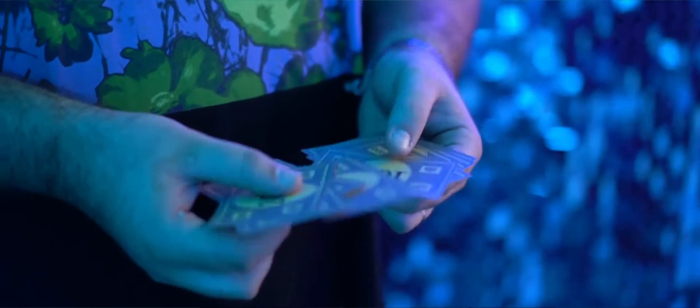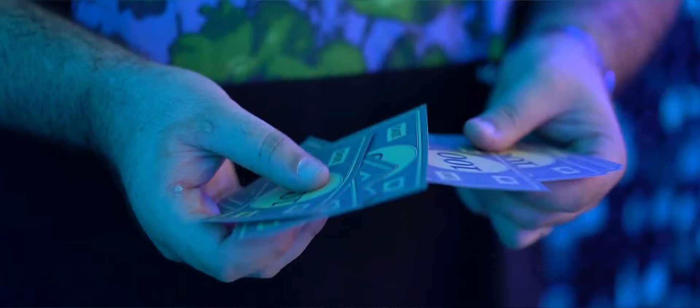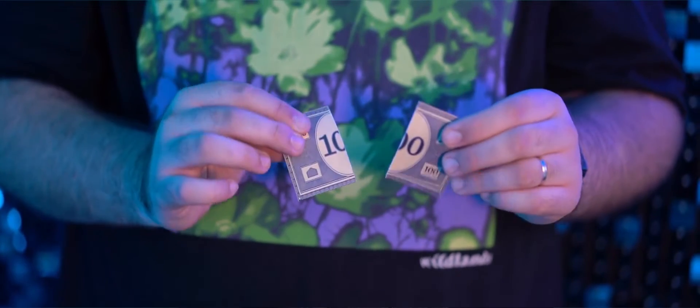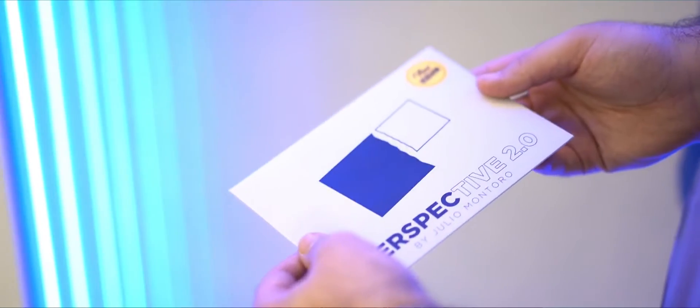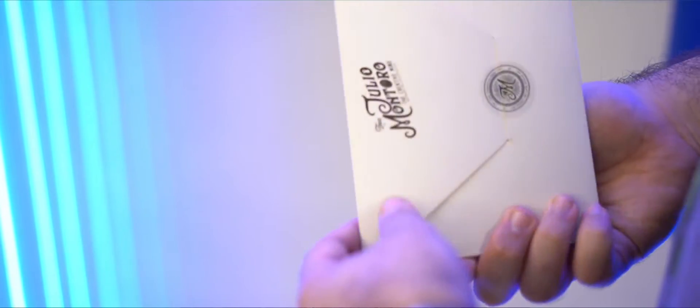Many people who bought the original Perspective asked me to do a version where you can really tear the paper. With this version, now you can. You are going to receive 20 ready-to-go, specially printed Monopoly bills, so you can perform as many times as you want.